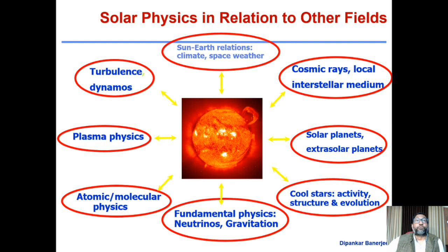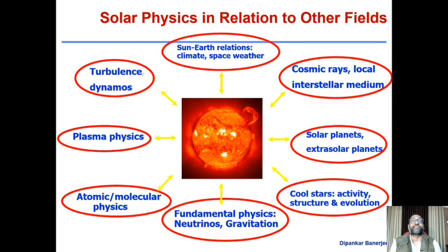We now understand our existence is primarily because of the presence of the sun at an appropriate distance. If the sun is doing something very dynamic, or whatever amount of radiation coming from the sun changes, it will directly affect our atmosphere and mainly the climate as well. There are two types of changes that can happen in our atmosphere: one is short-term, which we call space weather, and the other is climate change.